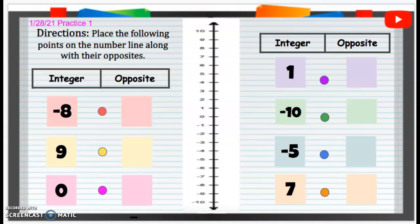January 28th, 2021, practice number one. Alright, so we're going to place the following points on the number line along with their opposites.